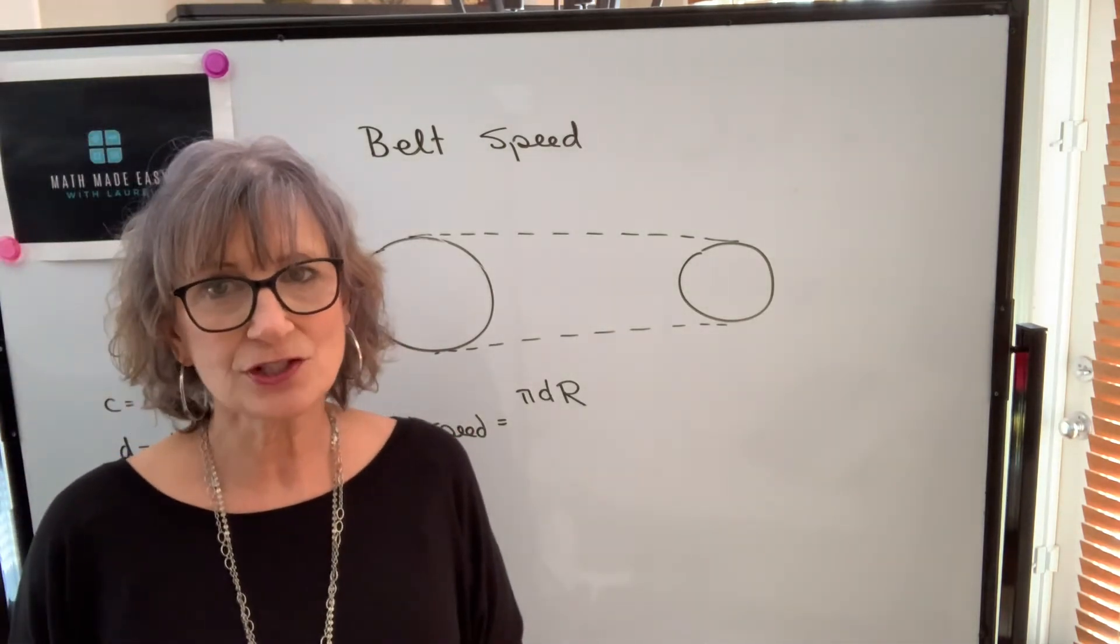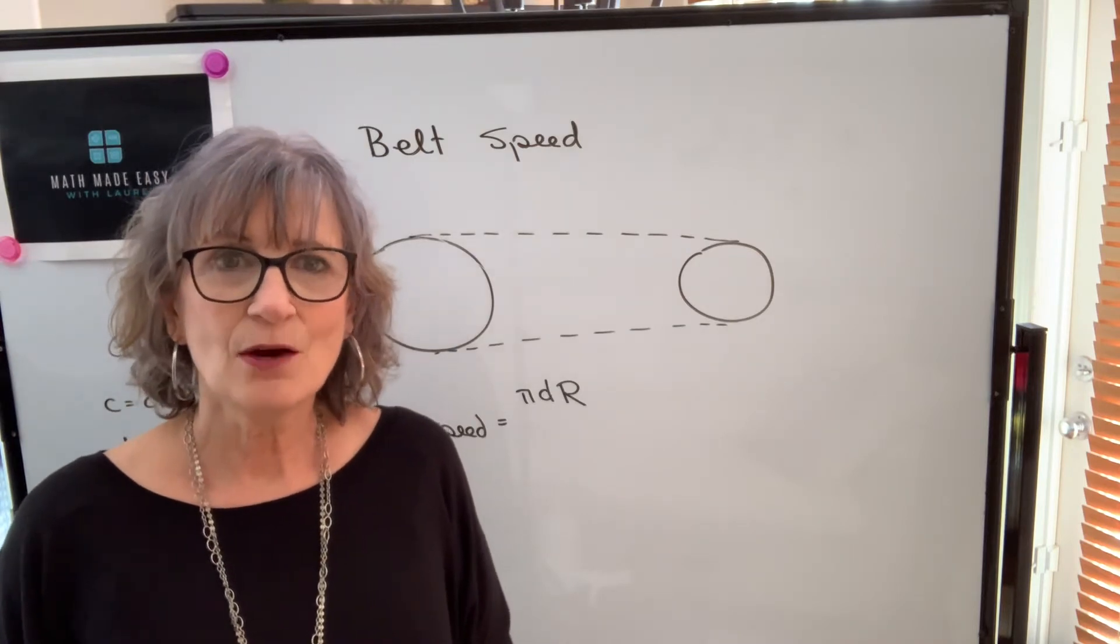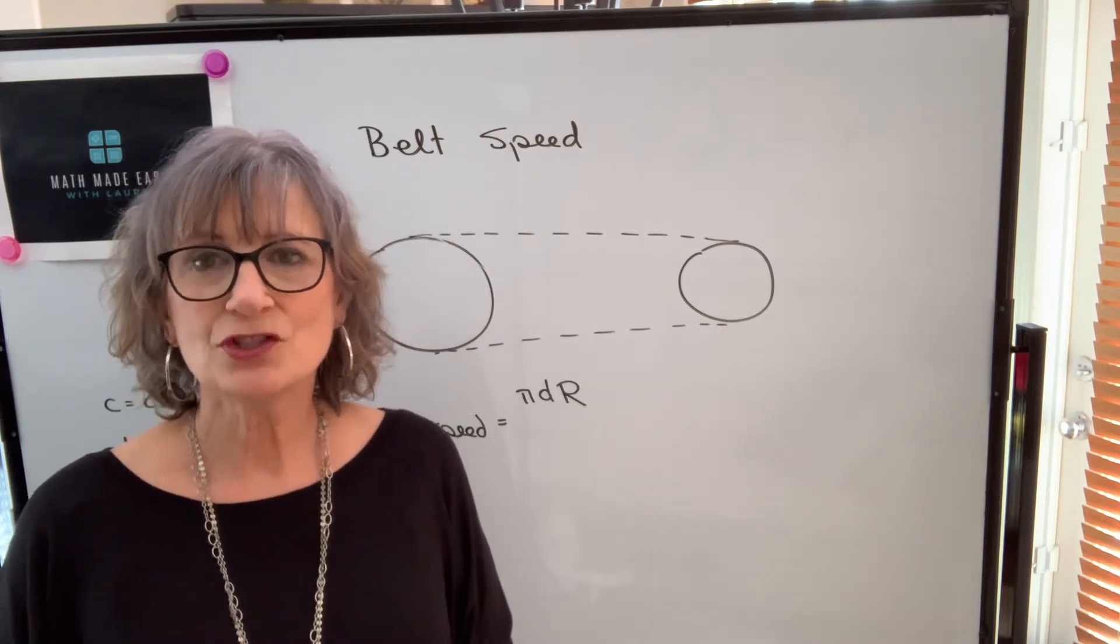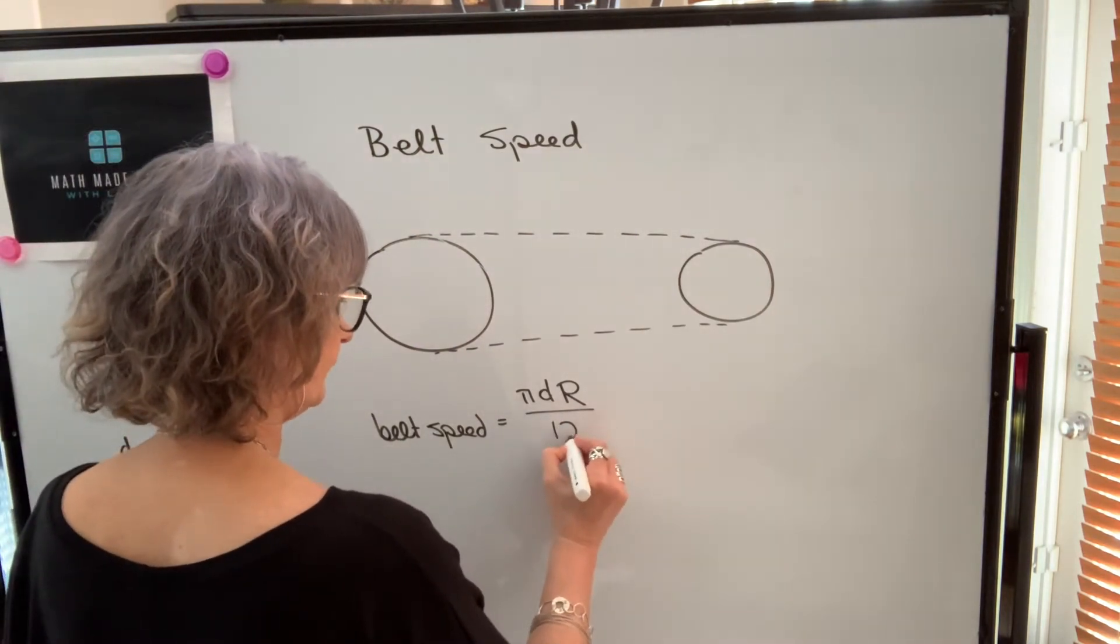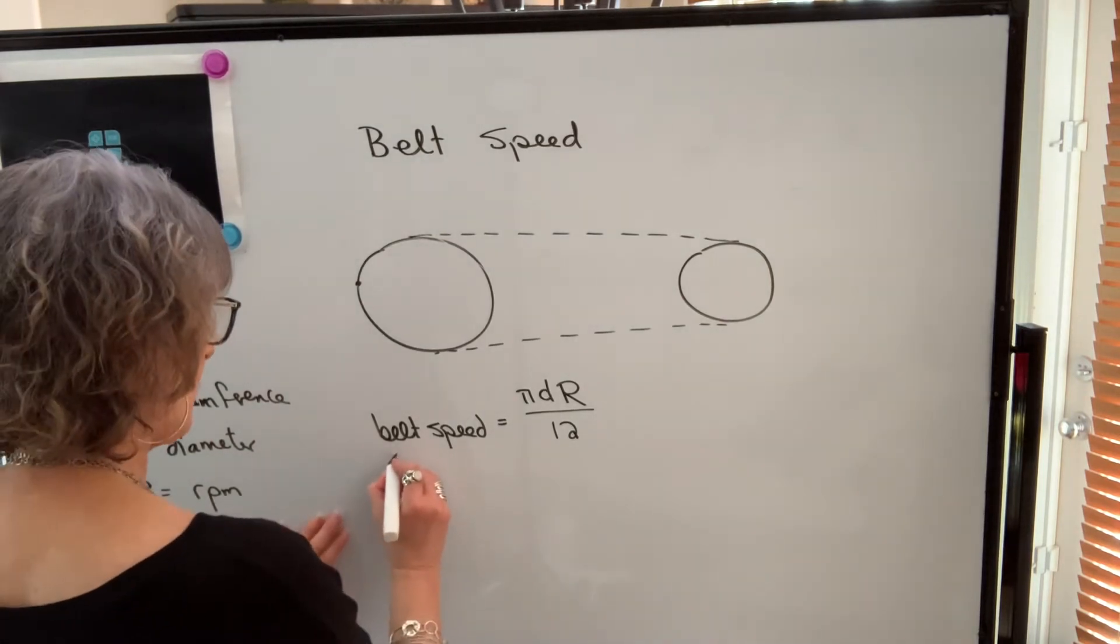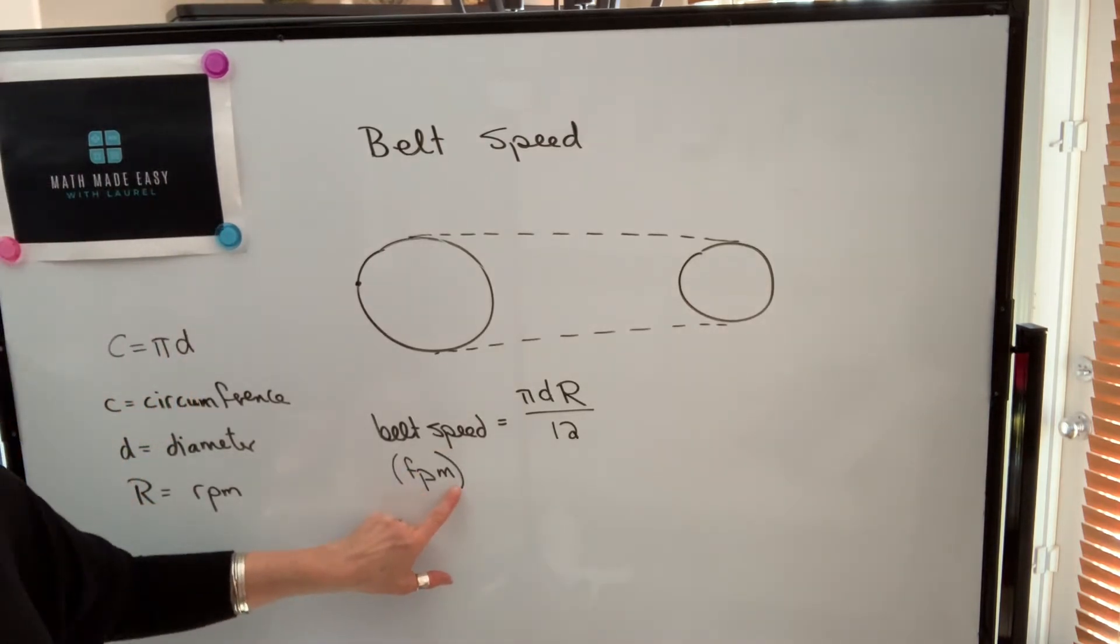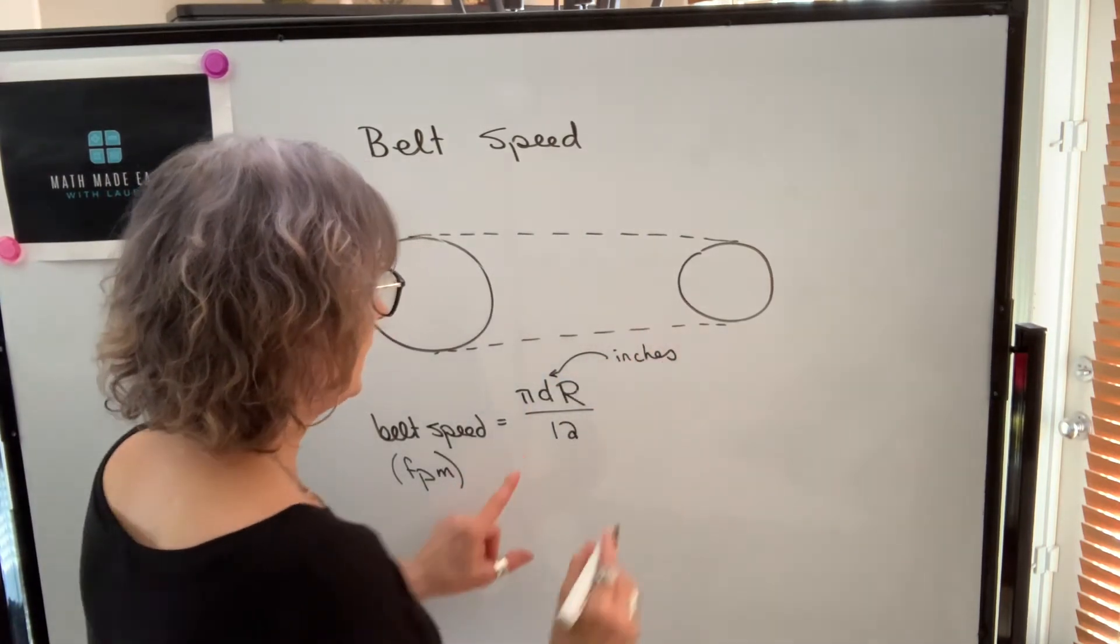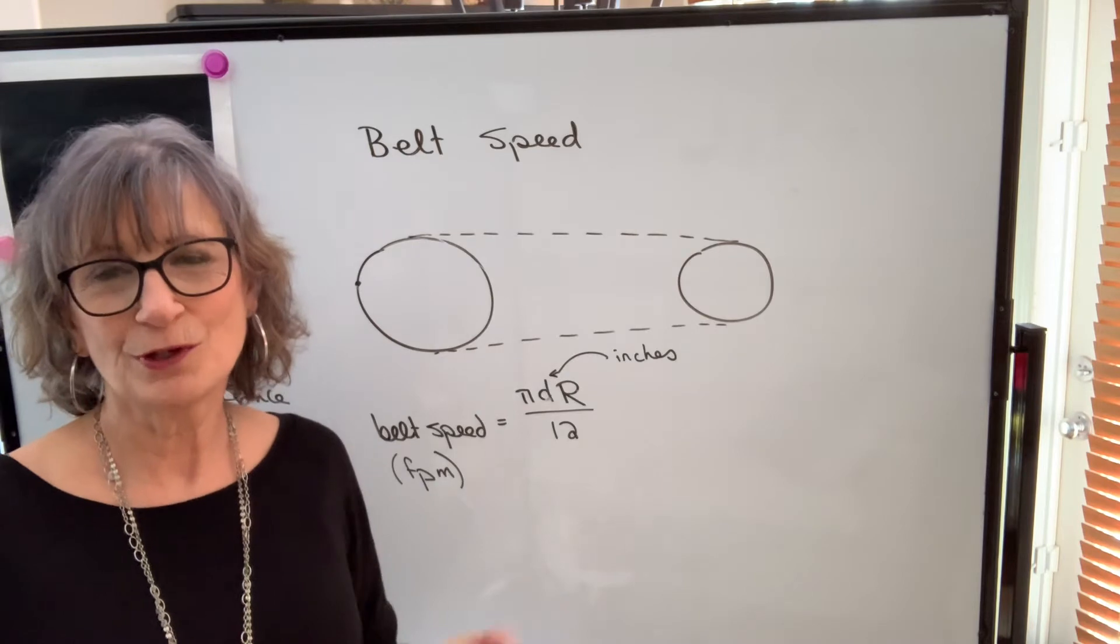Assuming my diameter is in inches, this will give me the belt speed in inches per minute. However, usually you write surface speed or belt speed in feet per minute. So what we're going to do is change inches to feet and the way that we do that is we divide by 12. So this is the formula we're going to use to find belt speed: pi times d times R divided by 12, remembering that belt speed is in feet per minute and diameter is in inches. If your diameter is in feet, you don't need to divide by 12. So just understand the units so that you understand the formula.